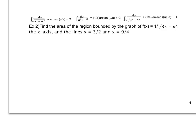So I'm supposed to find the area of the region bounded by the graph 1 over the square root of 3x minus x squared, the x-axis, and the lines x equals 3 over 2 and x equals 9 over 4. Well, that's telling me area means integrate. So integrate from 3 over 2 to 9 over 4, the function 1 over the square root of 3x minus x squared.